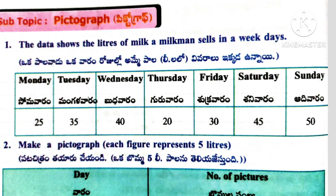Worksheet 3. Here the subtopic is pictograph. The data shows the liters of milk a milkman sells on weekdays. The table shows: on Monday the milkman sells 25 liters, on Tuesday 35 liters, on Wednesday 40 liters, on Thursday 20 liters, on Friday 30 liters, on Saturday 45 liters, and on Sunday 50 liters.